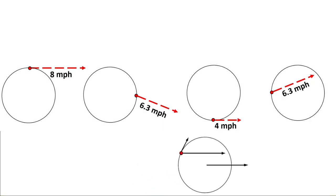We see that the mass is going from 8 miles per hour at the top, to 6.3, 4, 6.3, and back to 8 miles per hour on every rotation. This is a constantly changing rate of acceleration.